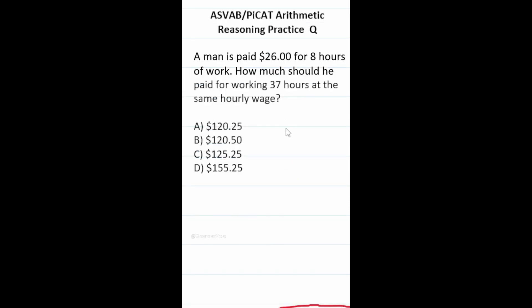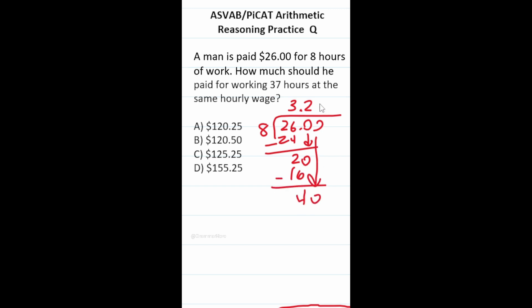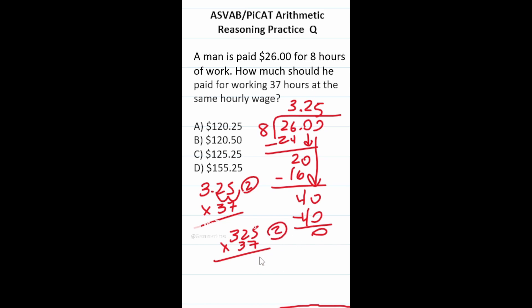This ASVAB PyCat arithmetic reasoning practice test question: we first do 26 divided by 8 to get the man's hourly rate. 8×3=24, remainder 2; add decimal and drop a zero; 8×2=16, remainder 4; drop the next zero: that's 3.25. So he makes $3.25 an hour. Now multiply by 37 hours worked — shift decimal two places right to get 325 times 37 with two decimals to move back. Working through: 35, carry 3; 14+3=17, carry 1; 21+1=22; add zero placeholder; 15, carry 1; 6+1=7; that's 9. Adding the partial products gives 12025, bringing decimals back gives $120.25.